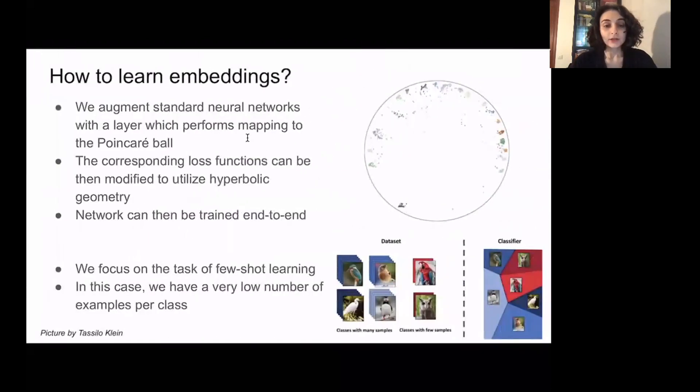How can we learn these embeddings? In our work we propose a very simple setup in which we just add one layer which performs exponential mapping from Euclidean to hyperbolic space. We add this layer after a standard neural network of choice. We can then modify the loss function so it would operate in hyperbolic space, and we can train the whole model end-to-end.